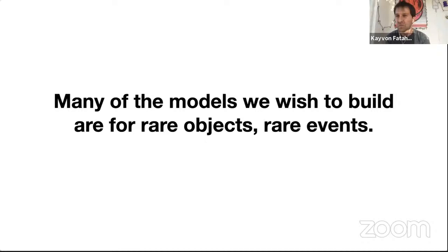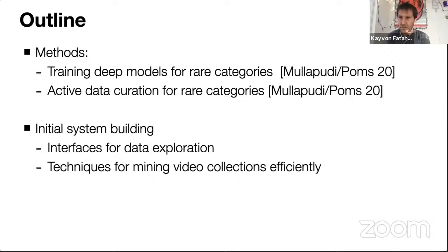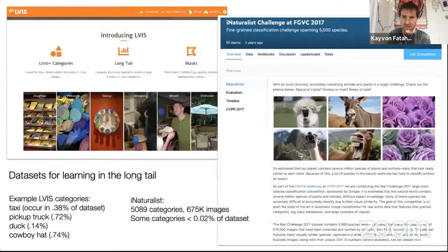I want you to keep the rare category context in your head. Most of the time when we are trying to train a model, the models we wish to build are for rare objects, events, or classes. The number of sliced backhands in a tennis match is fairly low; the number of times someone appears on TV wearing a mask is pretty low. If you have to mine these huge datasets for examples of very rare events, you definitely need to do a little bit of work. I'll switch from our unstructured datasets to datasets the community knows — long-tail image classification datasets like iNaturalist — to evaluate our methods.